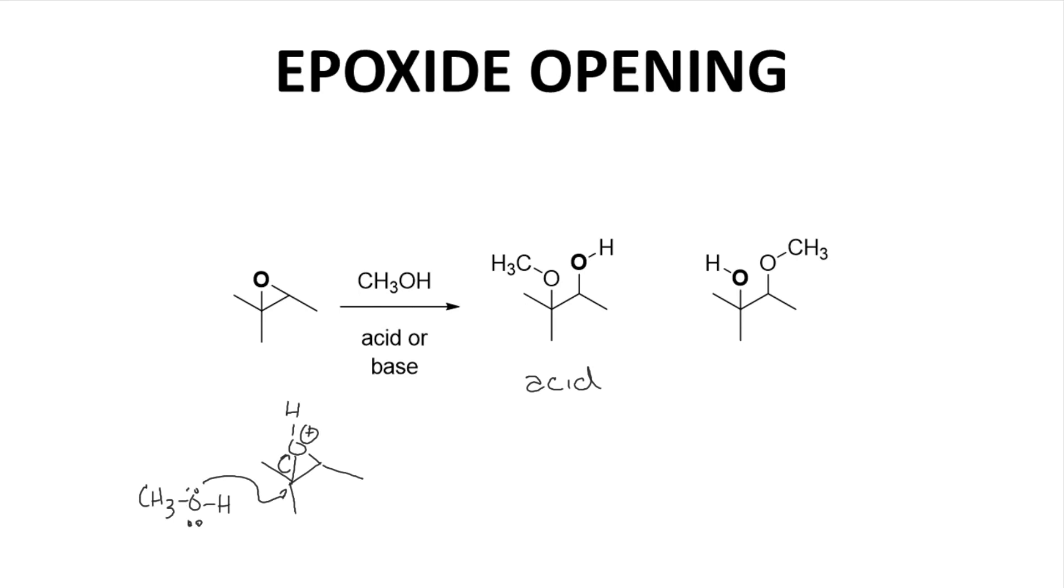Under basic conditions, there is no protonation. The nucleophile, now methoxide anion, must force open the neutral ring, and attack favors the less substituted side to give the right regioisomer, which is favored under basic conditions. So in this reaction, simply changing the pH of the reaction can give control over the regiochemical outcome of the epoxide ring opening.